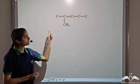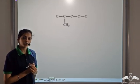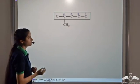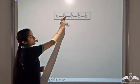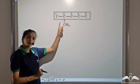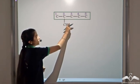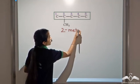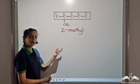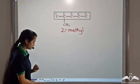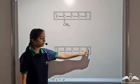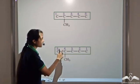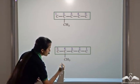Let's take another organic compound. The first step is to select the longest carbon chain — 1, 2, 3, 4, 5. If we number it from the left, the methyl group is at position number 2, so it gets the prefix 2-methyl. If we start the numbering from the right, we get 1, 2, 3, 4, 5, and the methyl group is now attached to carbon number 4, making it 4-methyl.